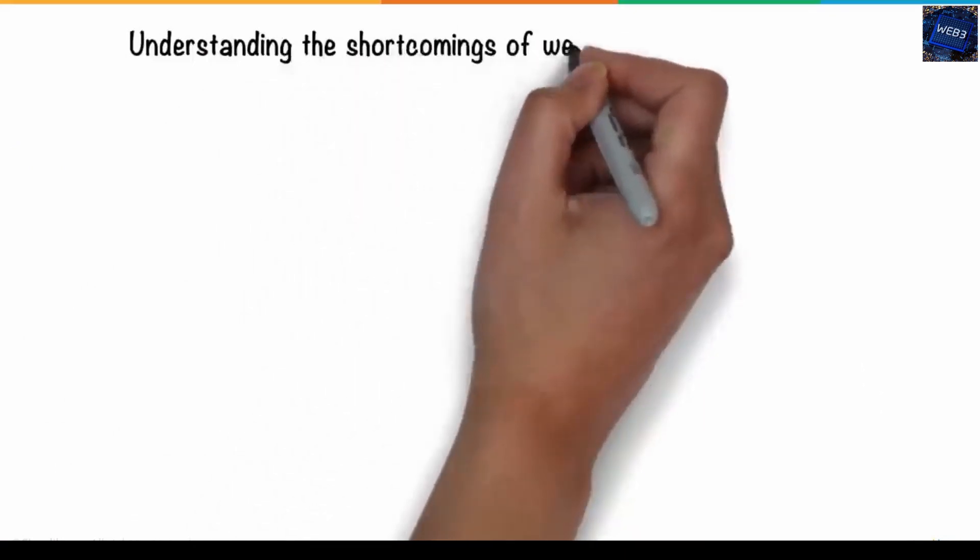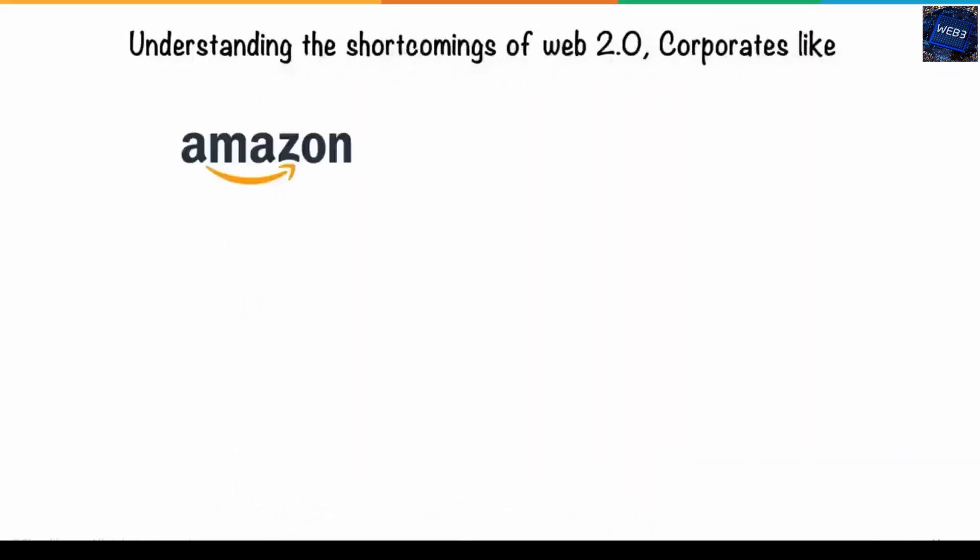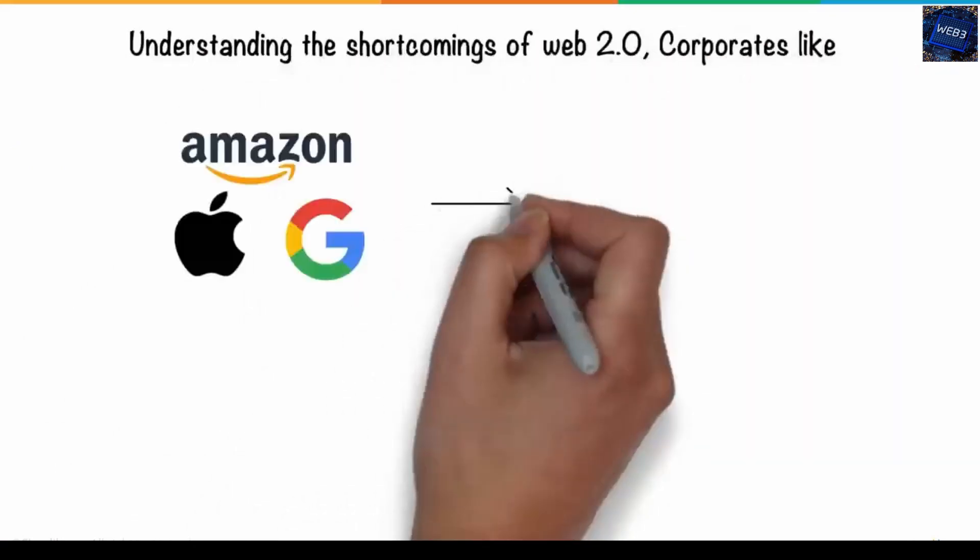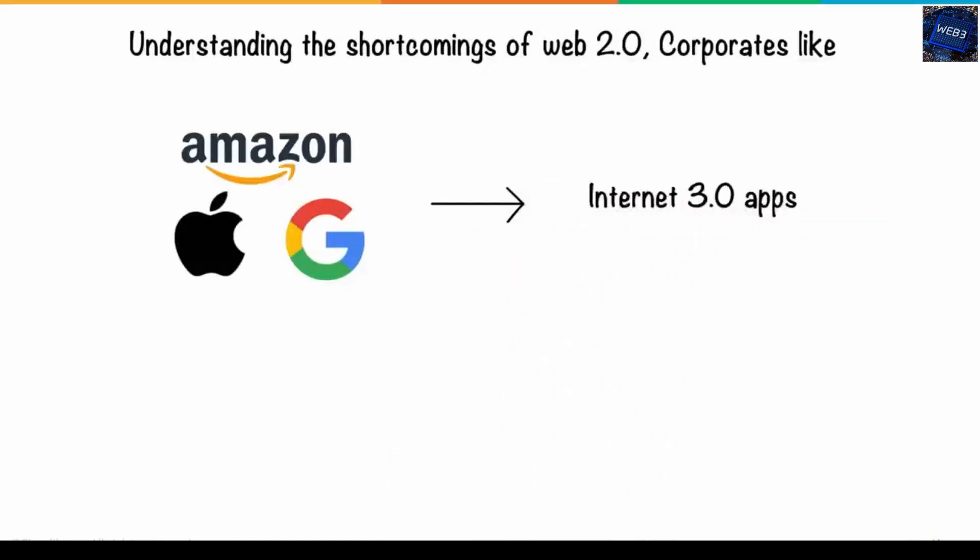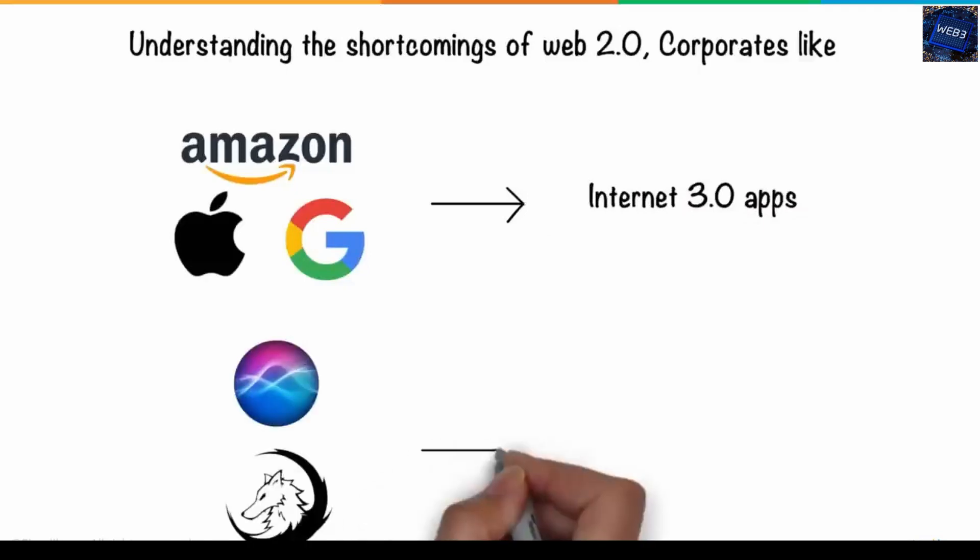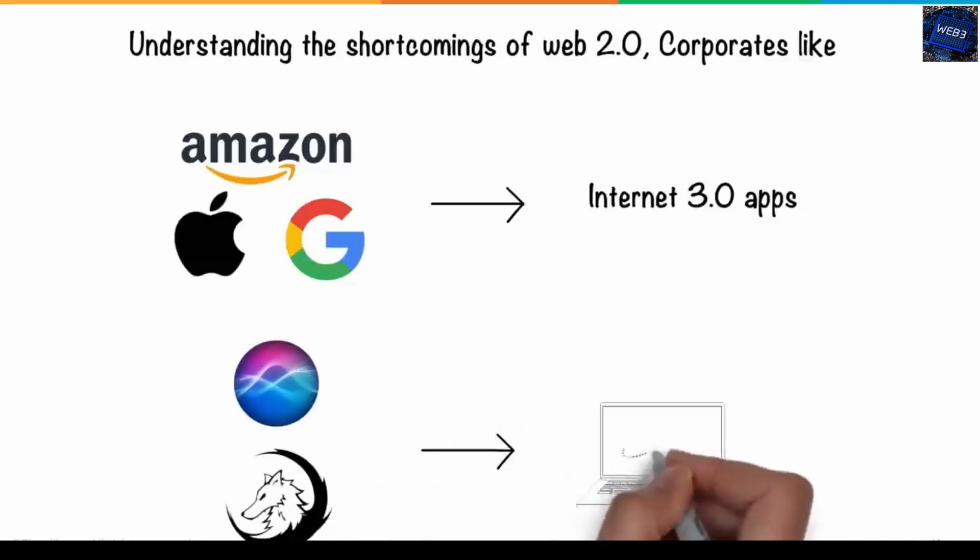Understanding the shortcomings of Web 2.0, corporates like Amazon, Apple, and Google are transforming their existing services into Internet 3.0 apps that abide by these four principles. Siri and Wolfram Alpha are two applications that use Web 3.0 features.